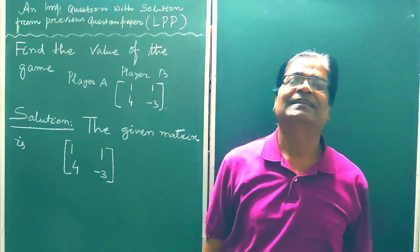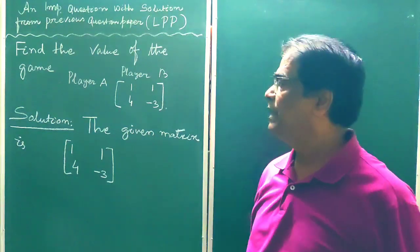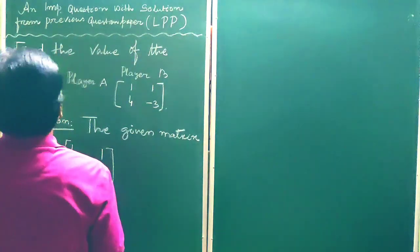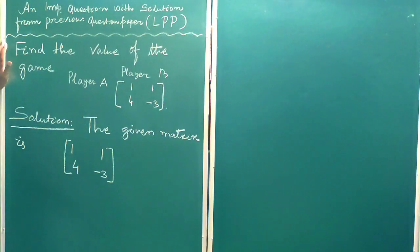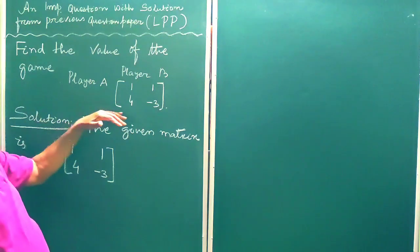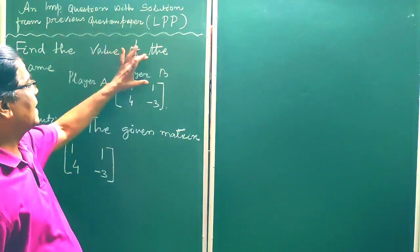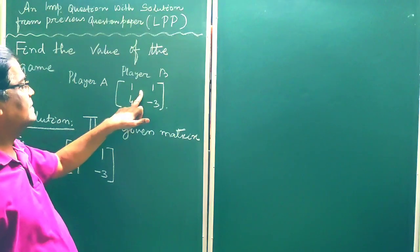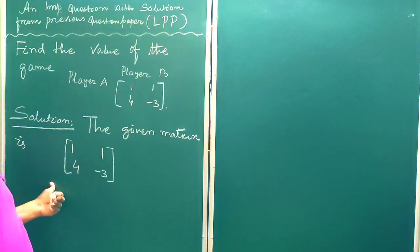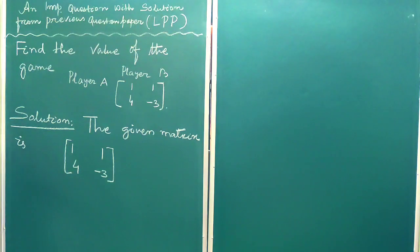Hello students. Let us solve again a problem from game theory. This is a question from a previous question paper. Find the value of the game. The game is given here with player B and player A. The given matrix is 1, 1, 4, minus 3, and we have to find the value of the game.